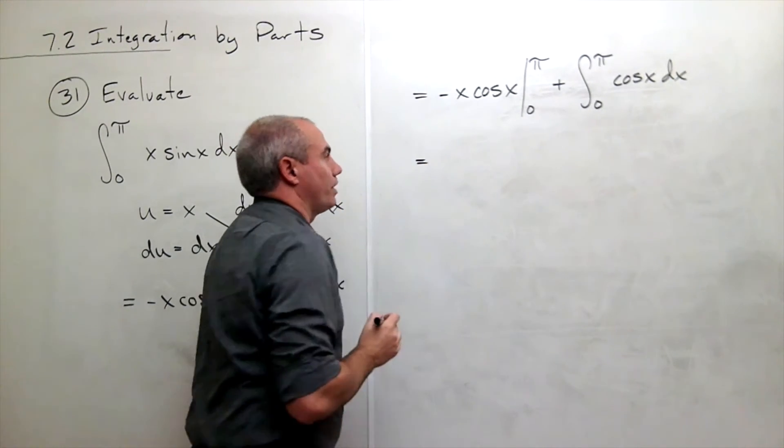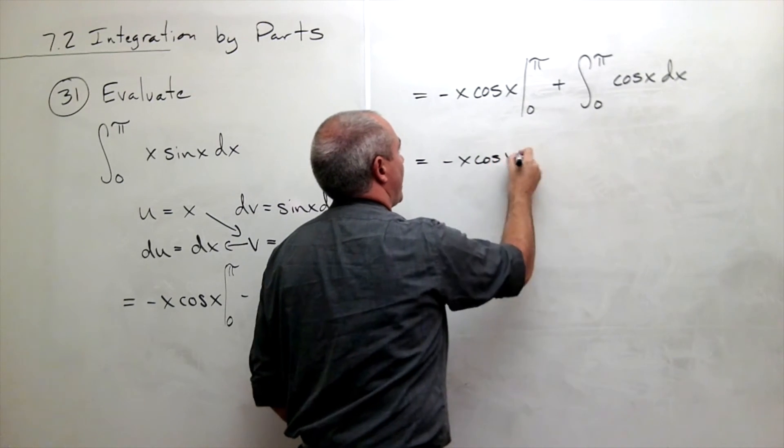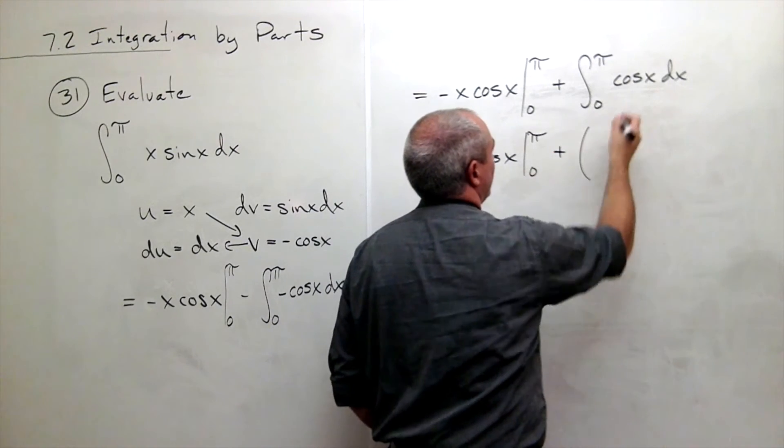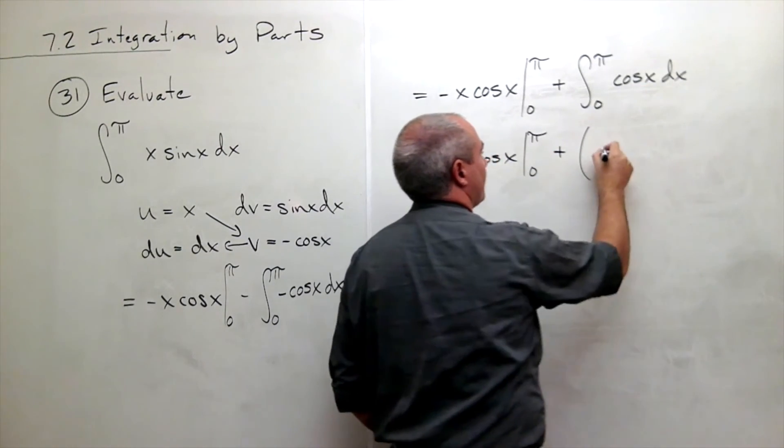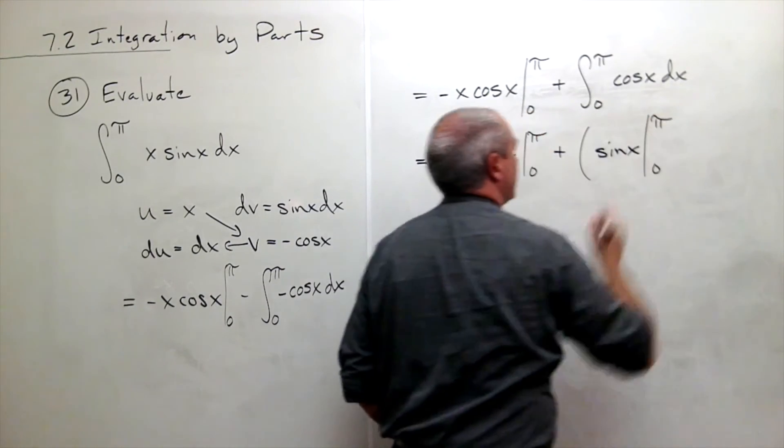That's a simple antiderivative. So I get minus x cosine x evaluated from 0 to pi plus, antiderivative of cosine of x is sine of x evaluated from 0 to pi.